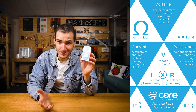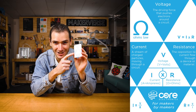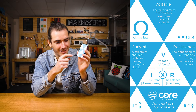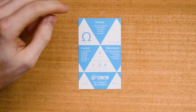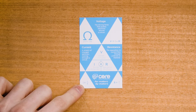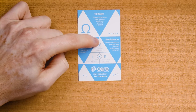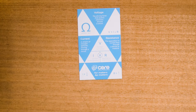Ohm's law, or V equals IR, is such a useful equation that we've put it on this handy cheat sheet to show the relationships. V equals IR can also be rearranged into I equals V on R, and R equals V on I. That can be a little bit too much to remember, so here's a trick: rearrange V, I, R into a triangle, and you can just cover the quantity that you want to solve for.